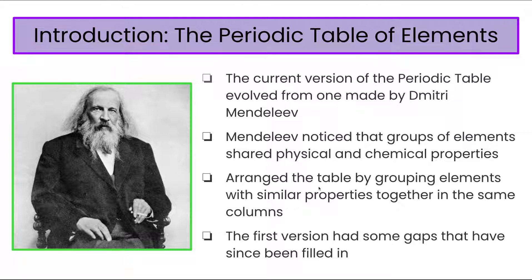He arranged the table by grouping elements with similar properties together in the same columns. And as he started doing that, there were still some gaps in the periodic table, according to his method of organization. But he guessed that either those elements didn't exist or hadn't been discovered yet. And he was, in fact, correct in that they hadn't been discovered yet. So our current version has actually been completely filled in, whereas the first version had some gaps.